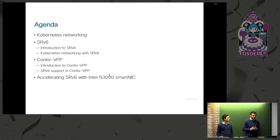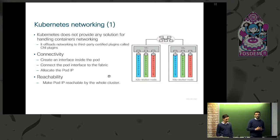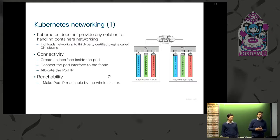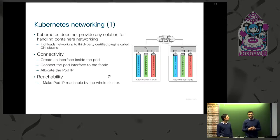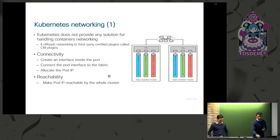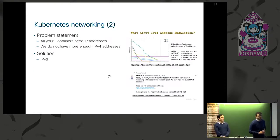Kubernetes doesn't do anything for networking — it offloads this function to CNI plugins, which are supposed to do two main things. The first is connectivity: when you create a new Kubernetes pod, the CNI plugin creates an interface inside the pod, connects it to the network fabric — either a vSwitch or similar — and allocates an IP address. The second function is making that pod reachable across the cluster.